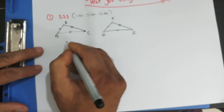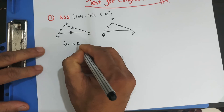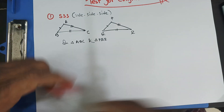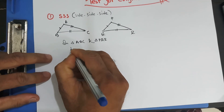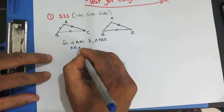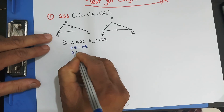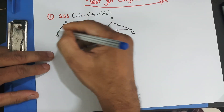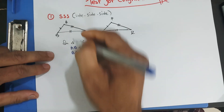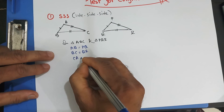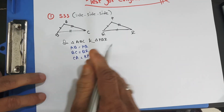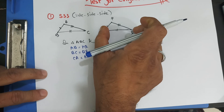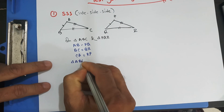In triangle ABC and triangle PQR: AB equals PQ, BC equals QR, and CA equals RP. When three sides of a triangle are equal to three sides of another triangle, then we can say these two triangles are congruent.